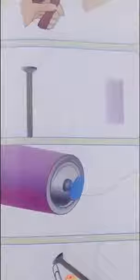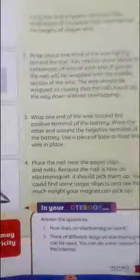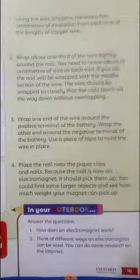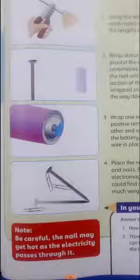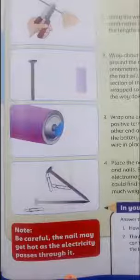The other end is around the negative terminal of the battery. Use a piece of tape to hold the wire in place. Now you have to use one end of the wire with the battery positive terminal and the other end of the battery negative terminal.